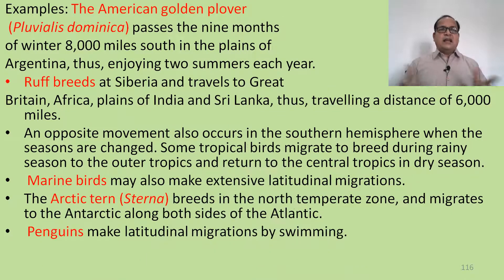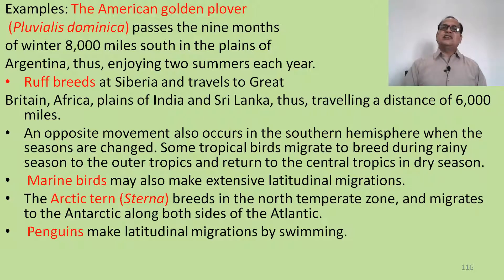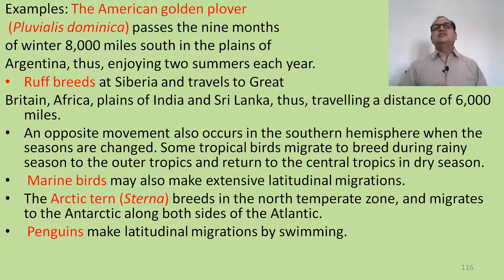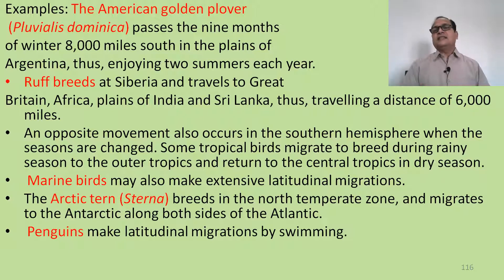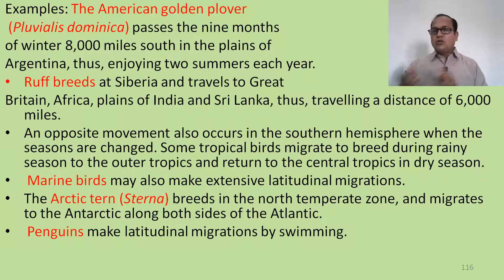For example, the American golden plover (Pluvialis dominica) spends nine months of winter about 8,000 miles south in the plains of Argentina, thus enjoying two summers each year. The Ruff breeds in Siberia and travels to Great Britain, Africa, the plains of India, and Sri Lanka, covering a distance of 6,000 miles. Opposite movements also occur in the southern hemisphere when seasons change. Some tropical birds migrate to breed during the rainy season to the outer tropics and return to the central tropics in the dry season.